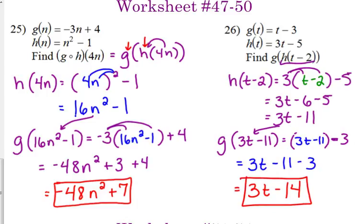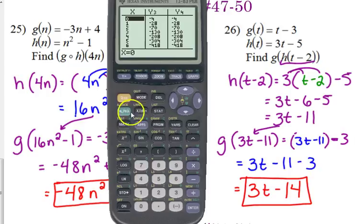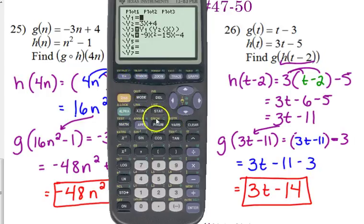Now, if you wanted to use your calculator to check these like the other ones, the only difference, we've got x minus 3, 3x minus 5. Here in y3, where we have the y1 parentheses, y2, instead of just x, you've got to put what's inside those parentheses right there, x minus 2.